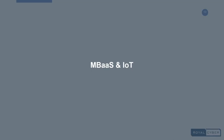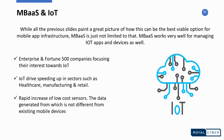Another great feature is Mobile Backend as a Service with IoT. While the previous slides paint a great picture of how MBaaS can be one of the best options for mobile app infrastructure, it's not limited to just that — it works very well with managing IoT apps and devices too. Enterprises and Fortune 500 companies are focusing their interest towards IoT, which makes the Mobile Backend as a Service platform the best candidate to support IoT use cases.